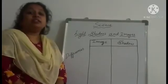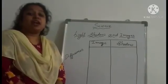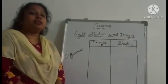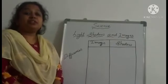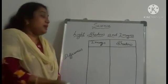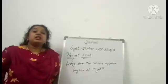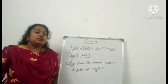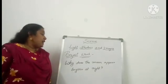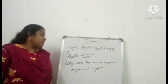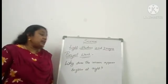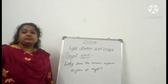So today in this class we have learned about the differences between image and shadow. A project work for today is: why does the moon appear brighter at night?